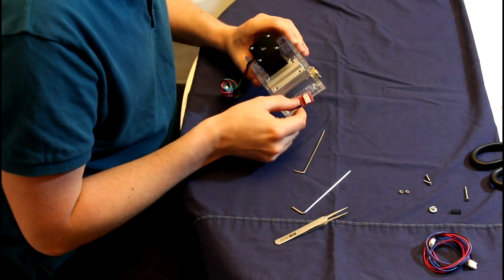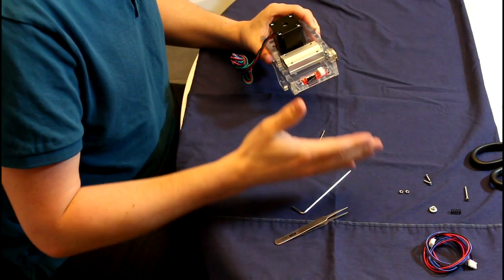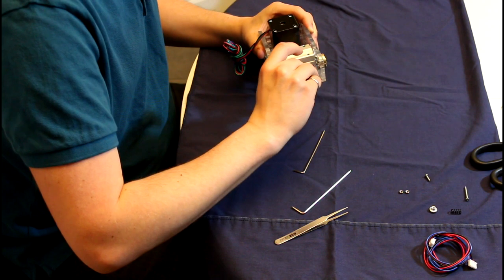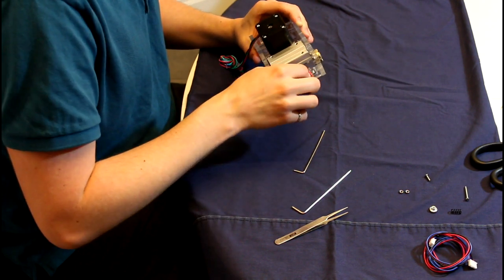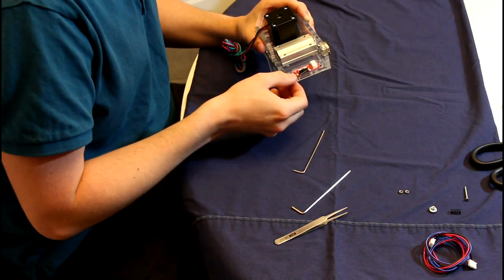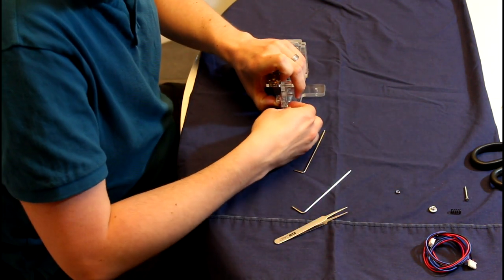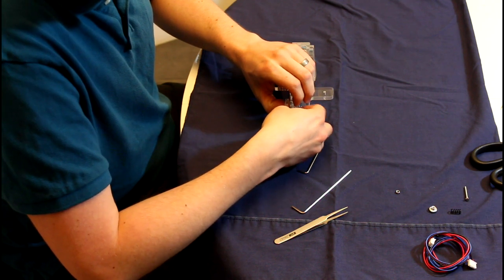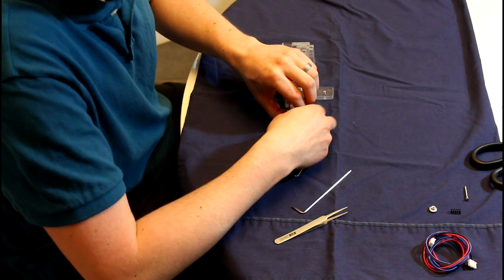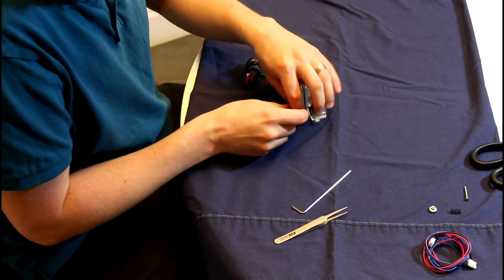So I'm just going to attach the end stop here and then the end stop is used to stop the x-axis from crashing into the side here and damaging parts. It also provides a home position. These are all adjustable end stops this time around, unlike the 2014 model. So the adjustable end stops will allow you to adjust the homing position of the printer easily and securely. This is just attached by two M3 by 10 millimeter screws and two M3 nuts.